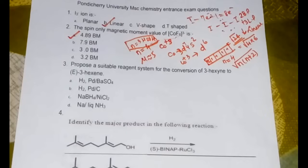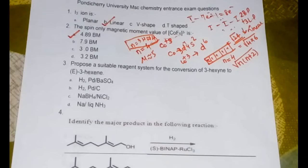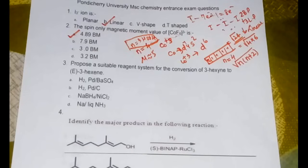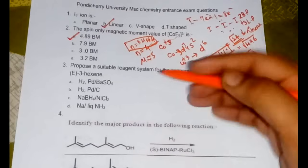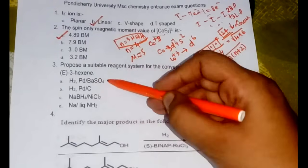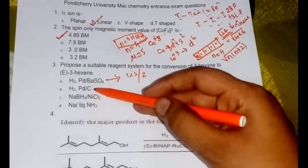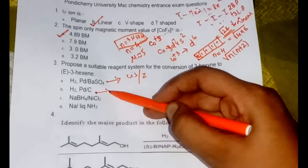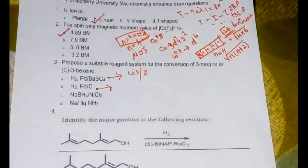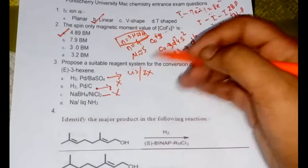Now the third question here is propose a suitable reagent system for the conversion of 3-hexyne to E-3-hexene. E-Z nomenclature is used in place of cis-trans. E means the highest priority group should be in the opposite side, that is it is analogous to the trans isomers. Therefore we need to find the reagent which gives a trans product. Lindlar's catalyst would be giving cis or Z products. H2 palladium carbon would be converting it into an alkane. NaBH4 and NiCl2 cannot convert the alkyne into an alkene.